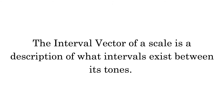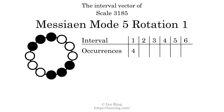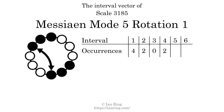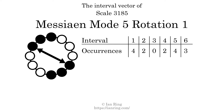The interval vector of a scale is a description of what intervals exist between its tones. There are 4 intervals with the size of 1 semitone, shown here, here, here, and here. There are 2 intervals with the size of 2 semitones. There are no intervals with the size of 3 semitones. There are 2 intervals with the size of 4 semitones. There are 4 intervals with the size of 5 semitones. There are 3 intervals with the size of 6 semitones. Each interval does not appear in this scale a unique number of times, so this is not a deep scale.